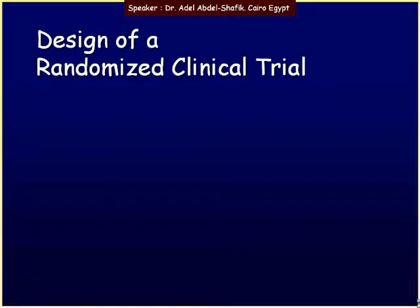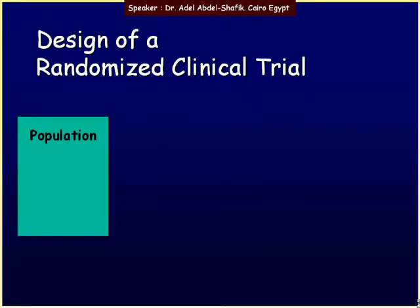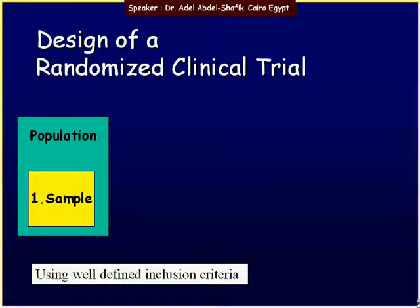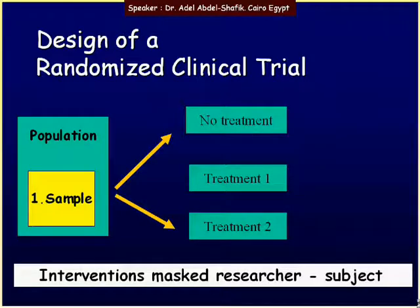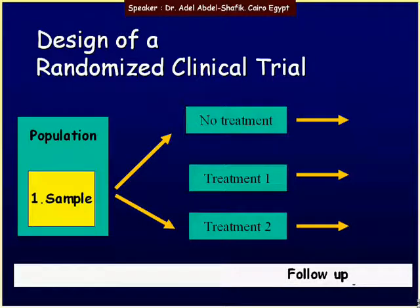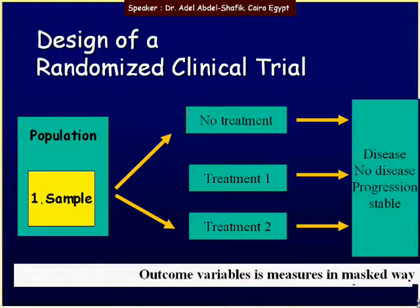To design a randomized clinical trial, we start by collecting a sample from the population using well-defined inclusion criteria. Then the sample is randomized into different arms like no treatment, treatment 1, or treatment 2. It is better that the intervention should be masked for both the researcher and the patient. Then follow-up will take place, waiting for the appearance of a special outcome like no disease or disease, progression or stability. It is also better that the outcome variable is measured in a masked way.